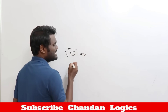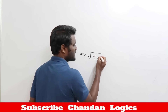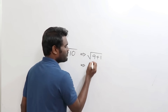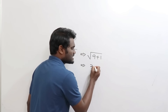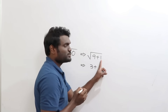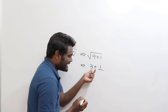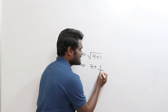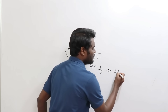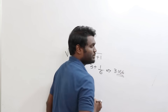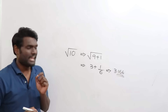Let us calculate square root of 10. Write 10 in terms of 9: this gives 9 plus 1. Square root of 9 is 3. As it is plus, write plus. It is 1 more, so write 1 divided by double of 3, which is 6. When you simplify, this gives 3.166. So square root of 10 ≈ 3.166.